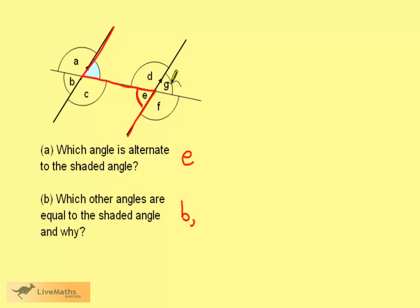There's another X shape here, and E and G are vertically opposite, so G is also equal. Our reason for these two being equal is that they are vertically opposite angles.